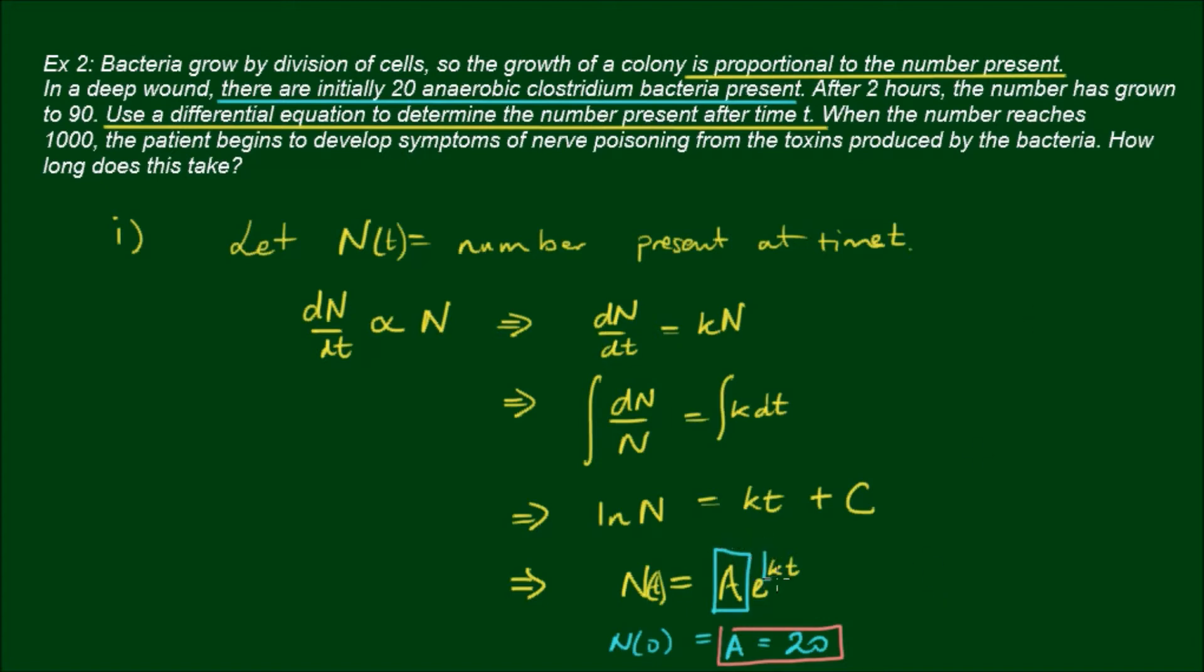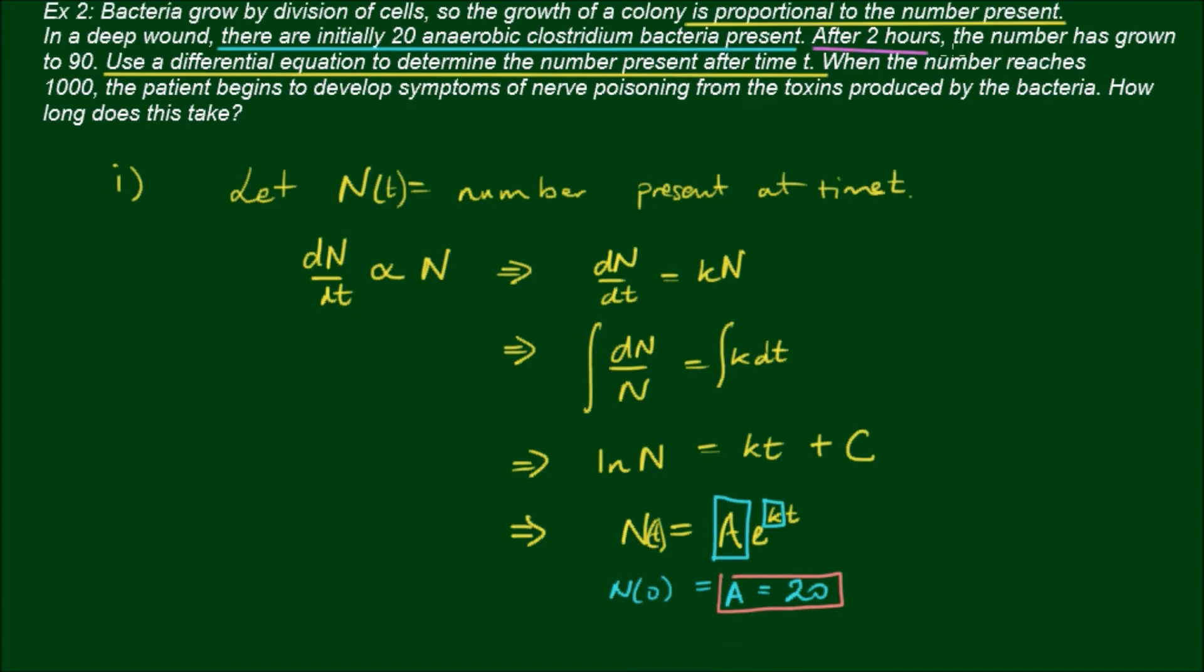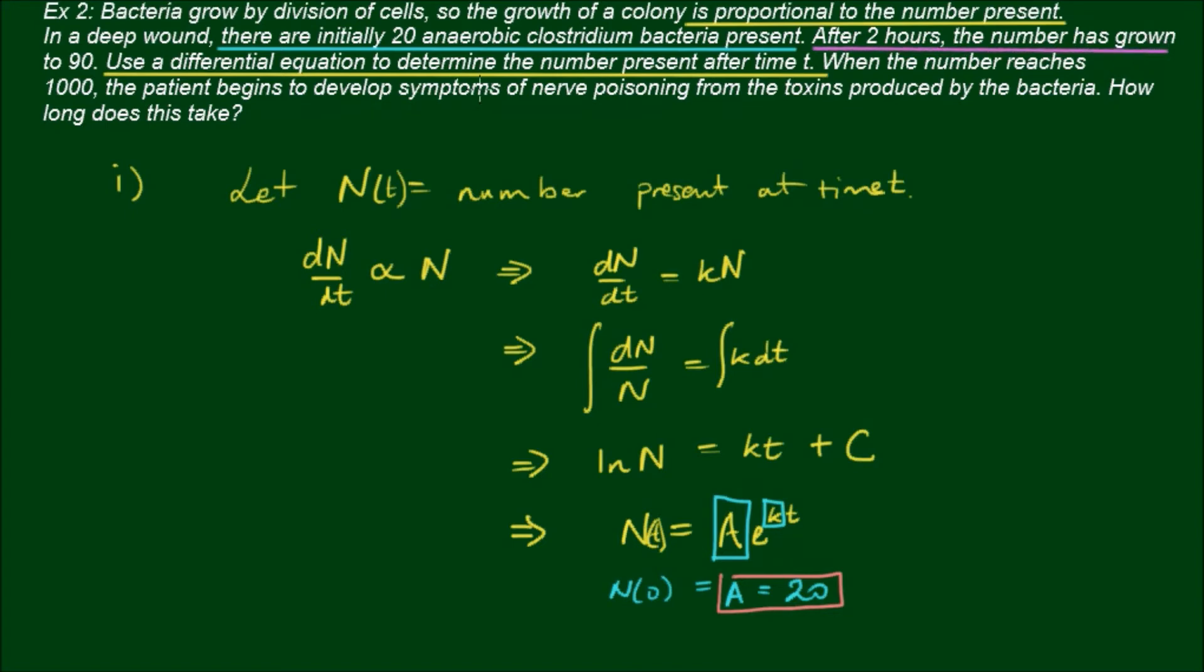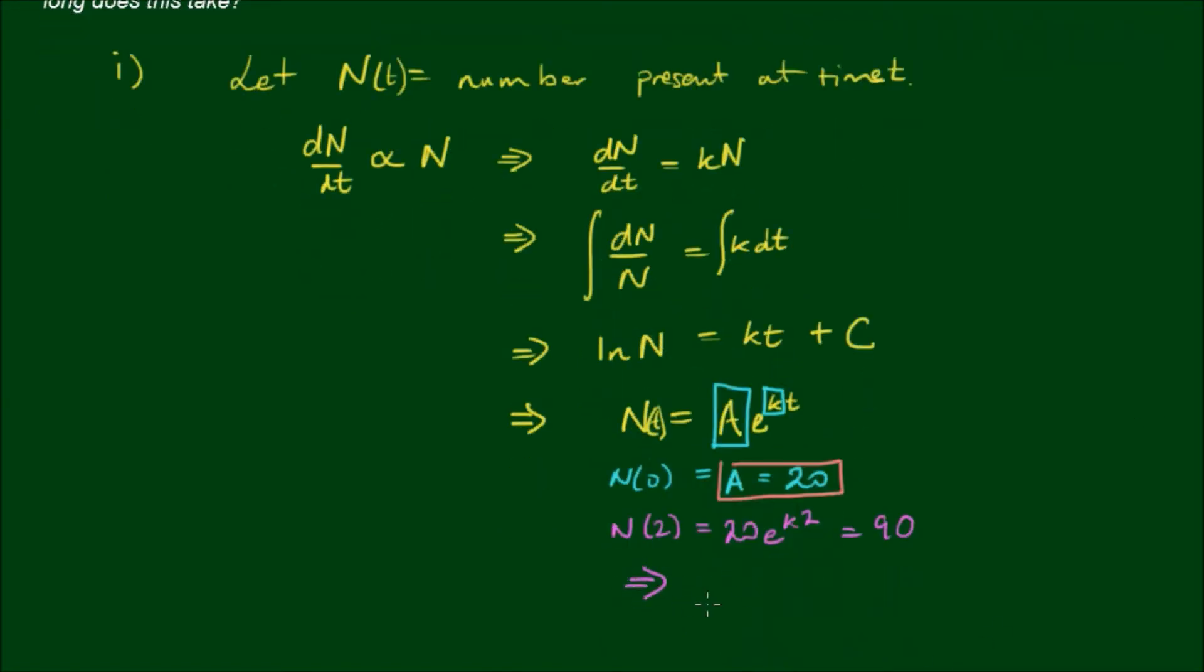Next we need to find the growth factor k. We're given that after 2 hours the number has grown to 90. So N(2), which equals 20 times e to the 2k, equals 90. Rearranging, e to the 2k equals 90 over 20, which equals 9/2.